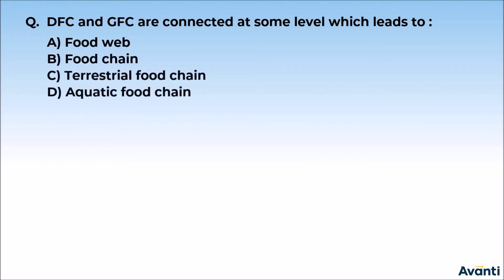Our question is, DFC and GFC are connected at some level which leads to A food web, B food chain, C terrestrial food chain, D aquatic food chain.